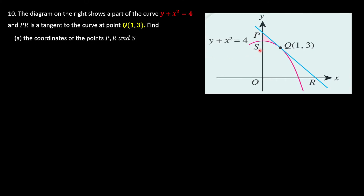The diagram on the right shows a part of the curve y + x² = 4. PR is the tangent to the curve at point Q(1,3). A tangent to the curve means that at this point they have the same gradient and they only touch one point of the curve. Now we're going to look at the points P, R, and S. P is basically here, which is the y-intercept of the line.